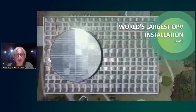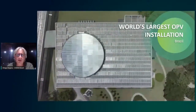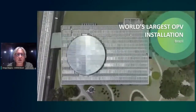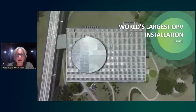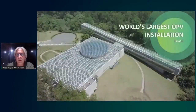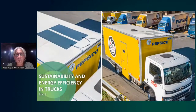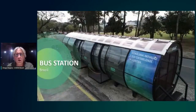Here is another similar outdoor installation — a shade structure in glass-glass encapsulation. The Kawa company headquarters in Brazil is completely covered by OPV in glass-glass encapsulation. Another application is a Natura project covering 1500 to 1600 square meters.